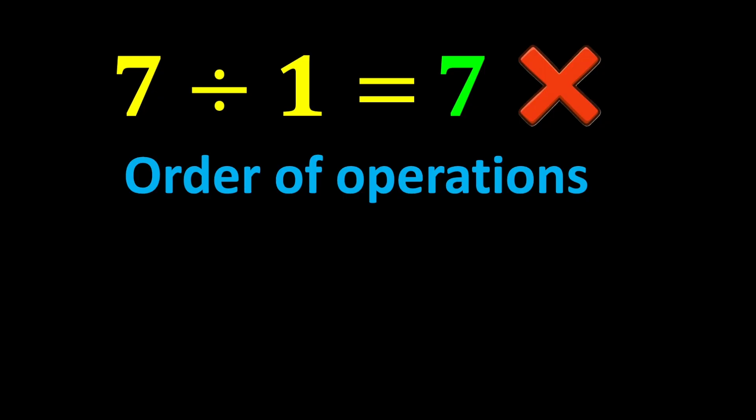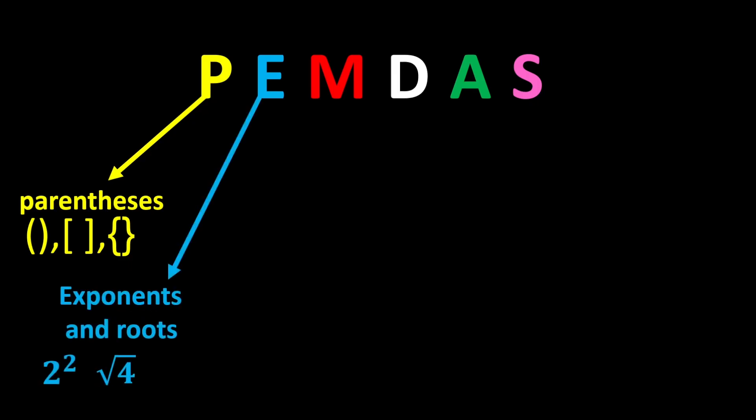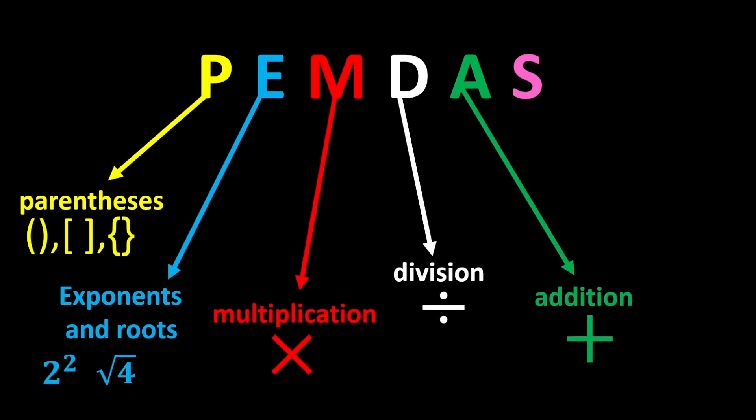The correct order of operations is known by a short acronym called PEMDAS. P stands for parentheses, E stands for exponents and roots, M stands for multiplication, D stands for division, A stands for addition, and S stands for subtraction.